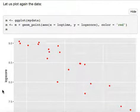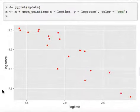Step 7: Plot the relationship again of the logarithm of time versus the logarithm of score. The graph clearly shows a straight line.